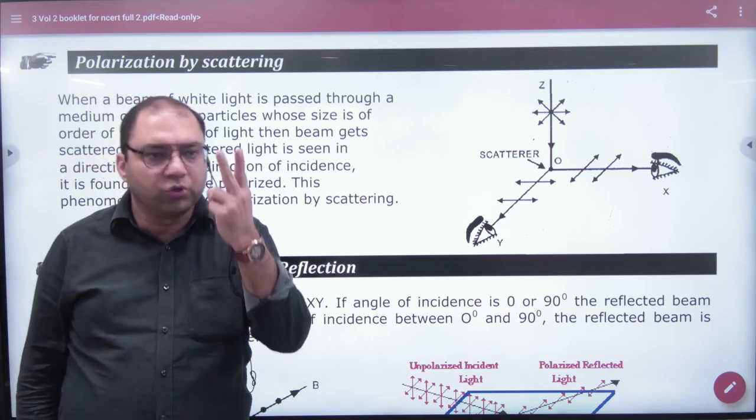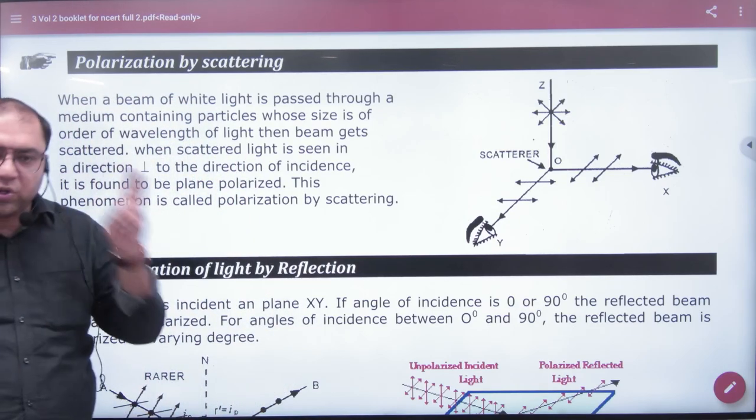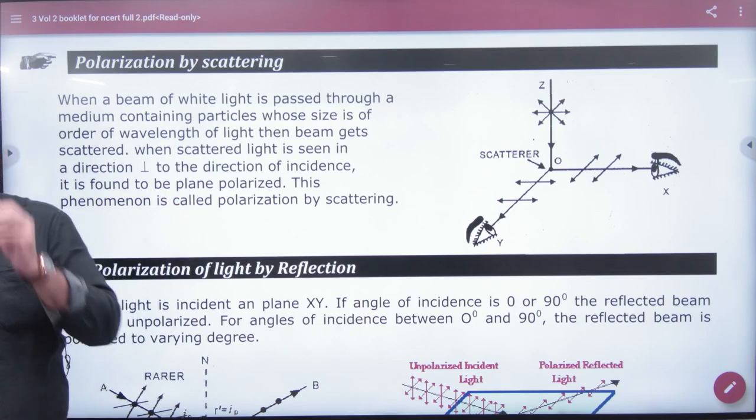another way to polarize light, a natural way of scattering. Light, when natural light scatters, scatter means that it turns out.